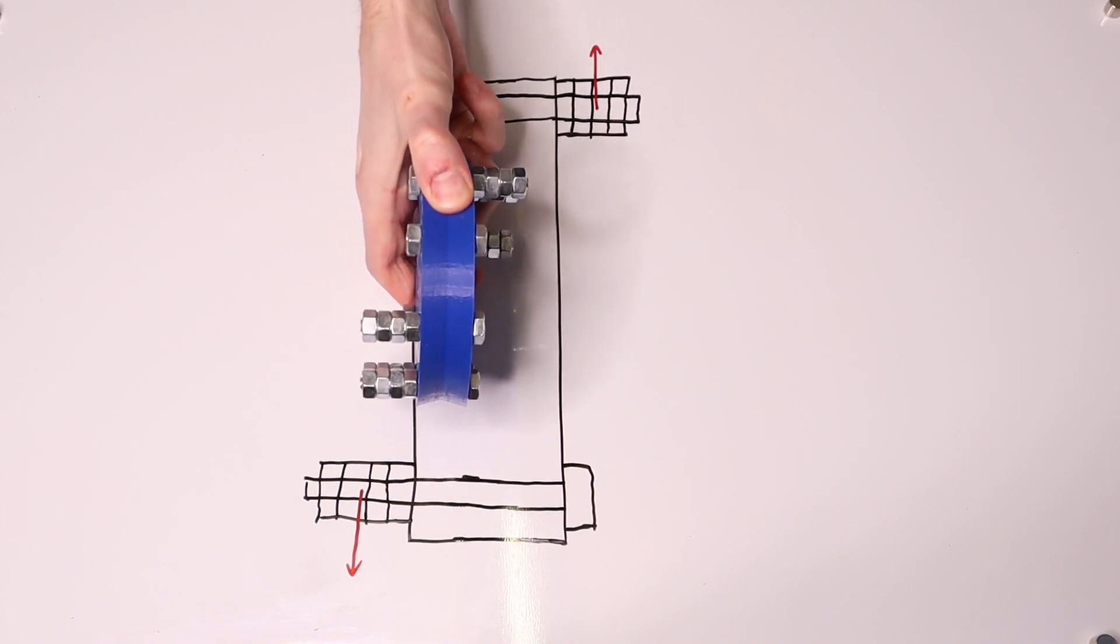I'd now like to take a look at dynamic imbalance. For that, we'll take a look at these wheels from the side on like this. In this case we again see the centrifugal forces on the nuts, but in this case the forces are not on the same line.